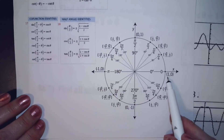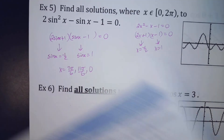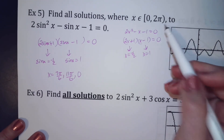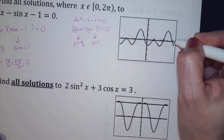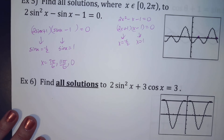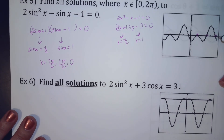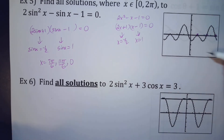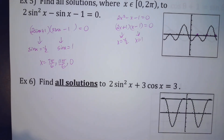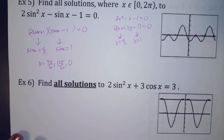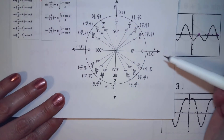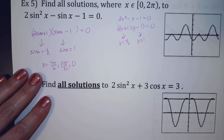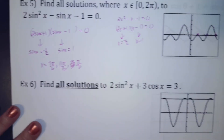And sine equals 1 — sine is a y value, so that happens at pi over 2. So there are three answers: 7pi over 6, 11pi over 6, and pi over 2.